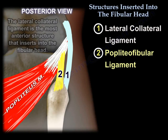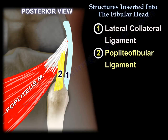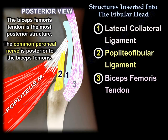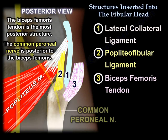The lateral collateral ligament is the most anterior structure that inserts on the fibular head, followed by the popliteo-fibular ligament, which comes from the popliteus down into the fibular head. The biceps is the most posterior structure inserted into the fibular head, with the common peroneal nerve posterior to it.